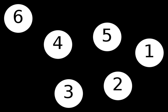An oriented graph is a directed graph in which at most one of (x, y) and (y, x) may be arrows of the graph. That is, it is a directed graph that can be formed as an orientation of an undirected graph. However, some authors use "oriented graph" to mean the same as "directed graph".